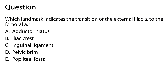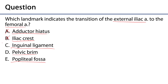And that leads us to our assessment question: which landmark indicates the transition of the external iliac artery to the femoral artery? Is it the adductor hiatus, the pelvic brim, or the popliteal fossa? The adductor hiatus — no, that's the transition from the femoral to the popliteal. The iliac crest — no, that's up in the hip, that's too high. The inguinal ligament sounds correct: the external iliac artery runs under it to become the femoral artery. Pelvic brim and popliteal fossa are both incorrect. So the correct answer is the inguinal ligament. Thank you very much for your time.